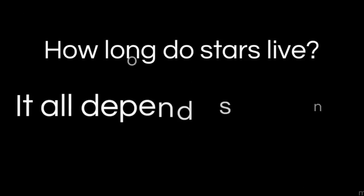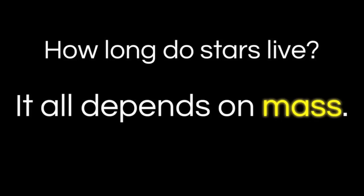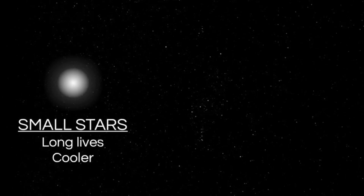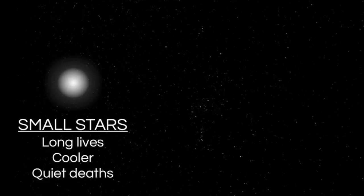So how long do stars live? To answer this, we really only need to know one thing: how big is the star? A star's life cycle depends entirely on mass. Small stars, because they don't get as hot, tend to live long lives with cooler temperatures. Small stars can live for billions upon billions of years — possibly even hundreds of billions of years. The sun, being an average star, will most likely live for about 10 billion years. Another interesting thing about small stars is that when they come to the end of their lives, they have what I'd call quiet deaths — the end of a small star's life is not nearly as explosive and energetic as the end of a large star's life.